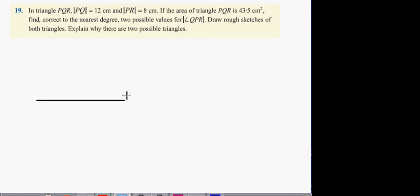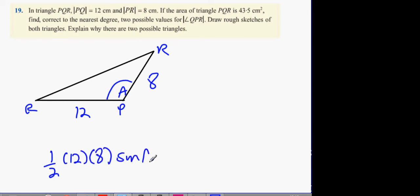PQ is 12, PR is 8, and we're going to join them. So it's Q, P, R. This is 12, this is 8. We're going to try and find out what this angle is here, angle QPR, which we'll call angle A. What we can do here is this: a half ab sine c. A half 12 times 8 sine A equals 43.5. Put that in, it's going to be 48 sine A equals 43.5.